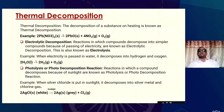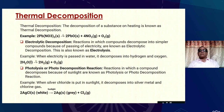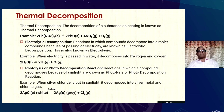What is thermal decomposition? The decomposition of a substance on heating is known as thermal decomposition. For example, when lead nitrate is heated, it forms lead oxide, nitrogen dioxide, and oxygen. What is electrolytic decomposition? Reactions in which compounds decompose into simpler compounds on passing electricity are known as electrolytic decomposition, also called electrolysis. For example, when electricity is passed through water, it decomposes into hydrogen and oxygen.